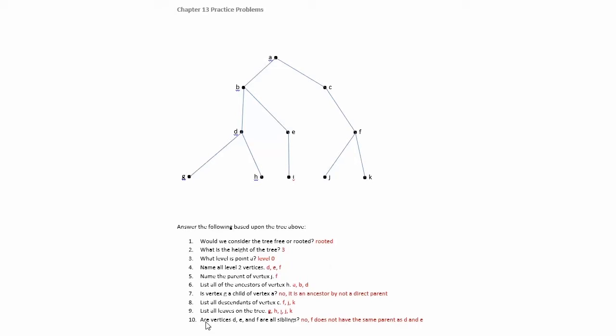And then, are vertices D, E, and F all siblings? So here's D, E, and F. We said that they were on level two. If you look at D and E, they have the same parent, but F doesn't have the same parent.